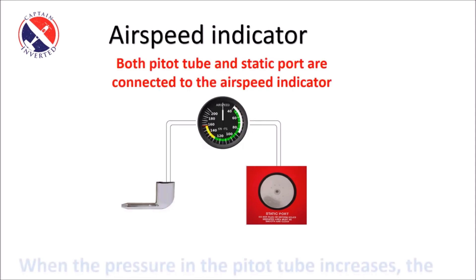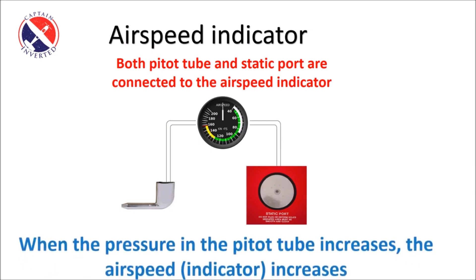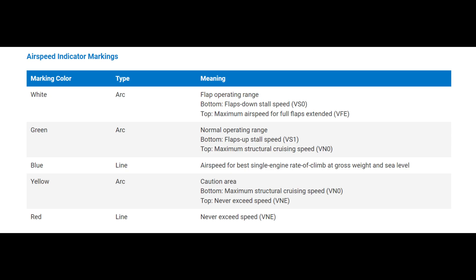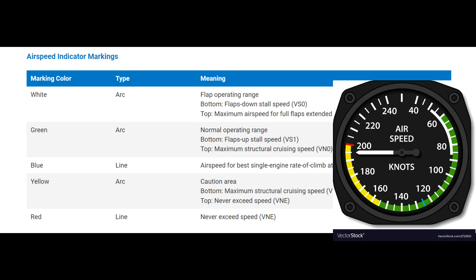The static port is connected to the airspeed indicator. The airspeed indicator shows the Flap Operating Range. The bottom is the Flap Down Stall Speed. The white arc is the maximum airspeed for flaps — the maximum airspeed with flaps extended.